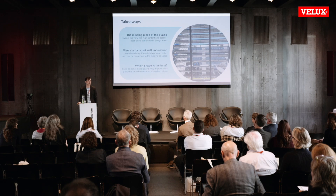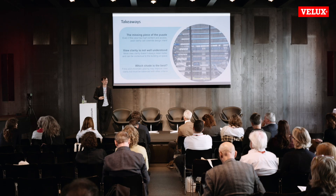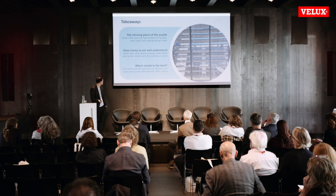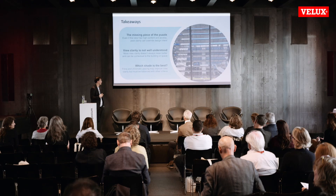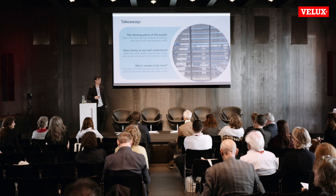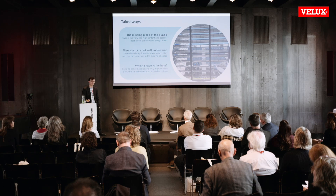There are cases where we might design for good daylight access but poor view clarity purposefully — for example, in bathroom applications where good daylighting is needed but a view going out is not necessarily a desired outcome. In terms of which shade performs best, the evidence points to films and chromatic glazing — things that can tint — which improve overall view clarity when glare sources are within the field of view. However, like all architectural elements, these need to be balanced with other criteria such as visual privacy, where tinting doesn't perform as well compared to other shading types.